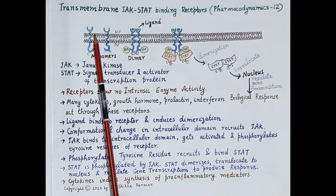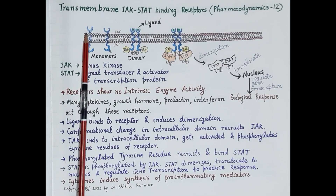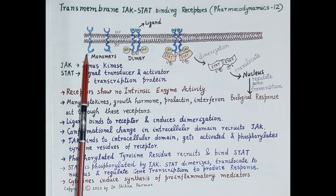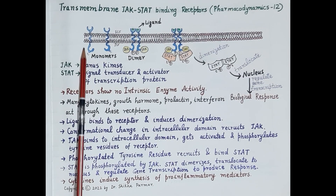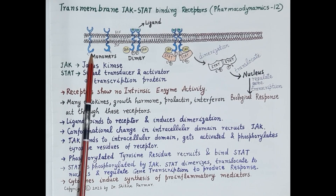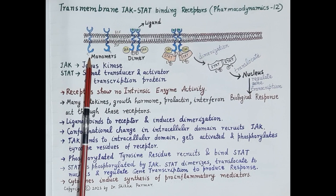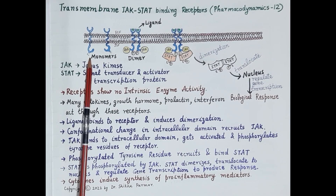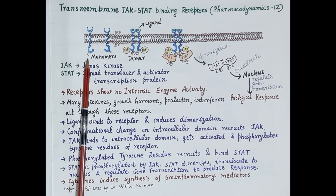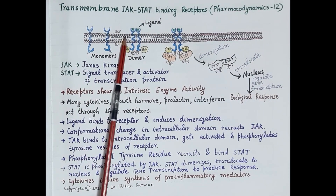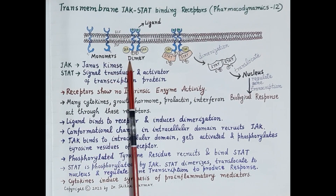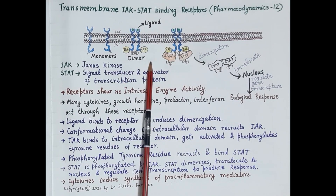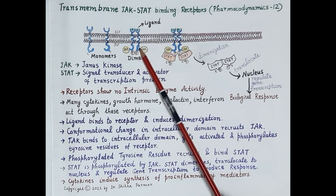This receptor has an extracellular ligand binding domain connected through a helical peptide chain to the intracellular subunit. This region of the intracellular subunit has no enzymes attached to it. In this region of the intracellular domain are present inactive tyrosine residues, depicted here by the small letter 't,' and the receptor exists in the monomeric state.